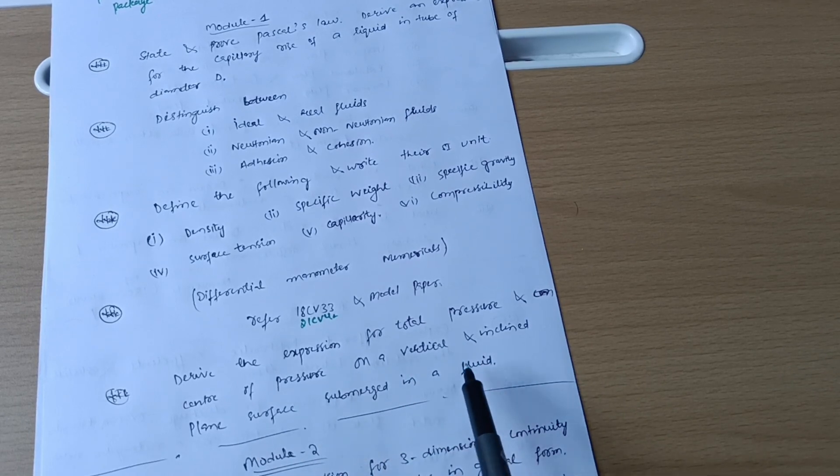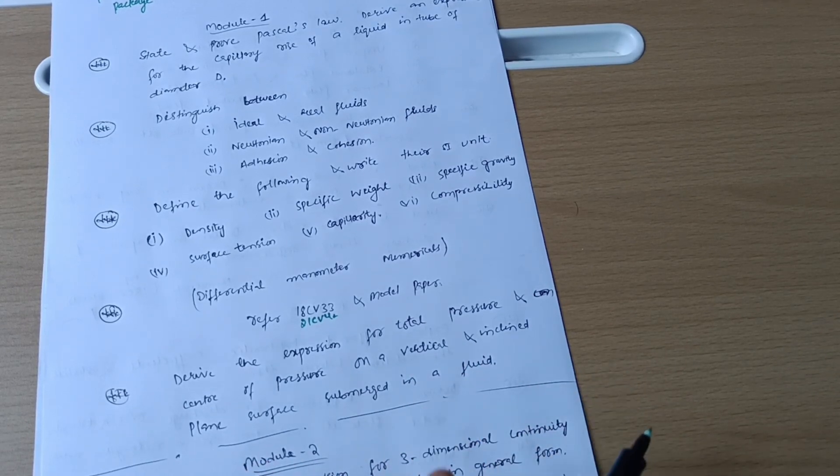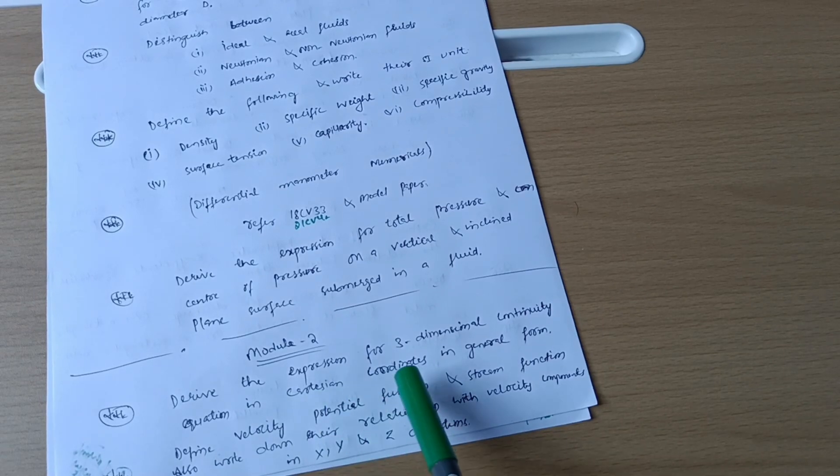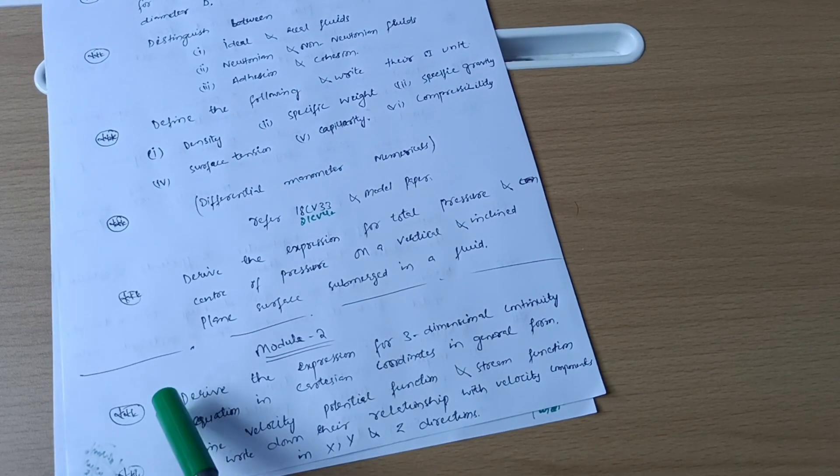Next is Model 2, where we have derive the expression for three-dimensional continuity equation in Cartesian coordinates in general form. This is a super important question, most frequently asked question in the VTU examination.